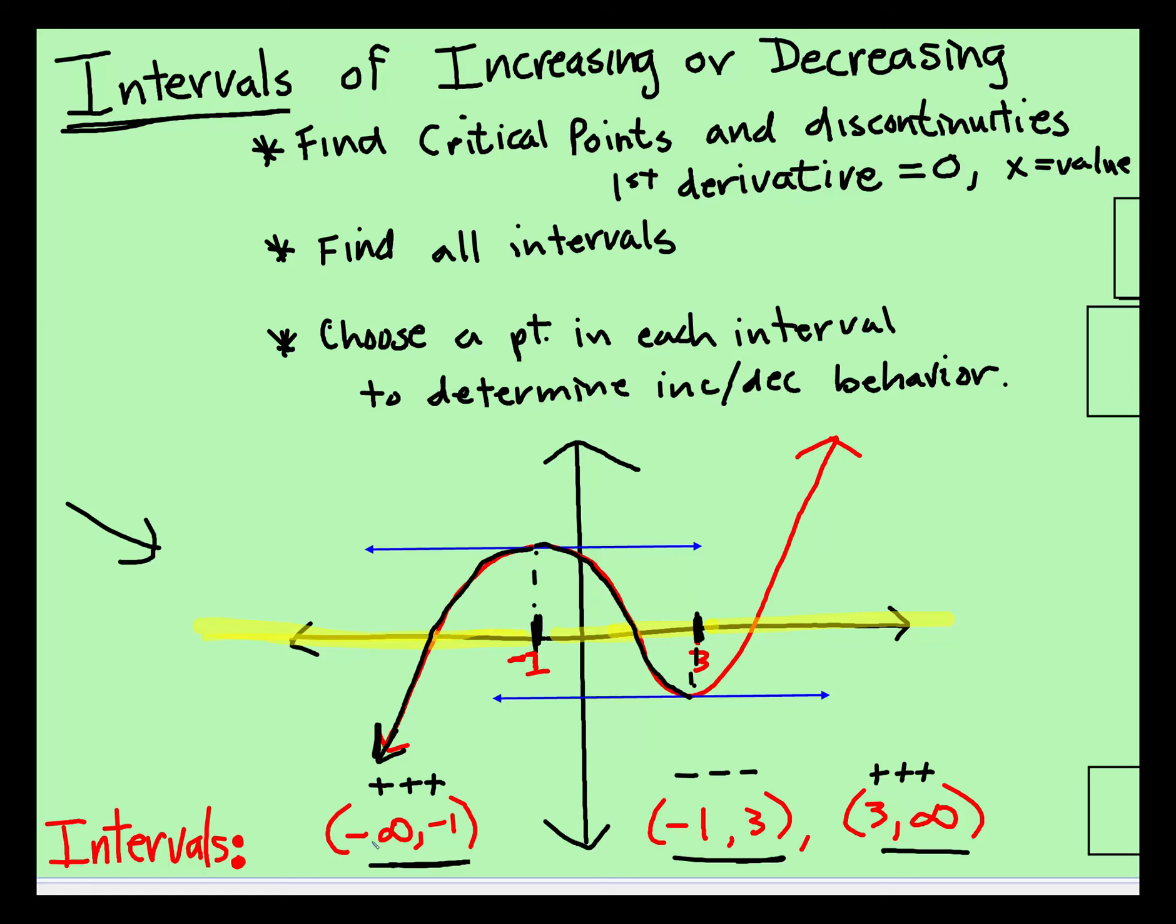So, for example, between negative infinity and negative 1, I'm going to keep it easy. I'm probably going to choose negative 10 because that's a really easy number to work with. Between negative 1 and 3, another really easy number to work with is 0. And from 3 to positive infinity, I'd probably use 10.